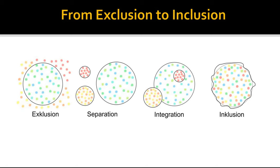In integration, all the learners are absorbed into the mainstream education system. This means that students with special educational needs also learn with their normal peers. But learners are required to fit in with the existing educational structure. No changes or adaptation are made in the learning environment as per the needs of the learners. For example, an orthopedically disabled learner is admitted to a school, but no ramp or elevator is provided to him to access the classroom.